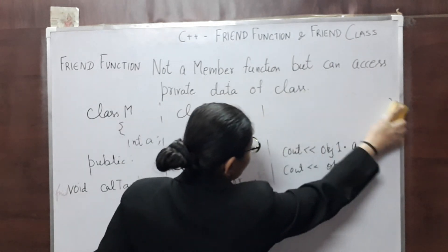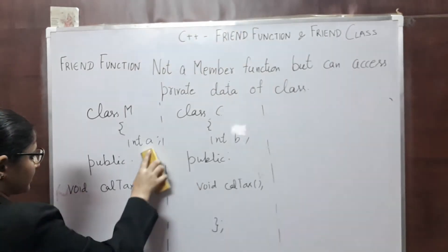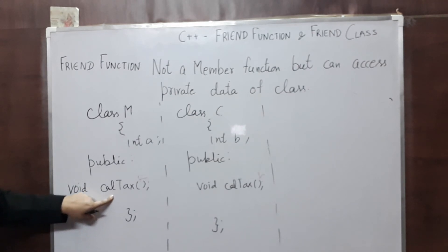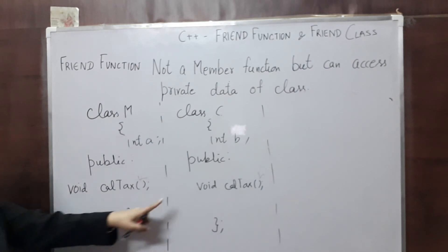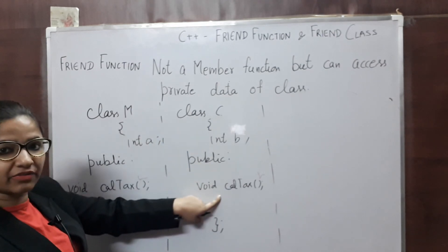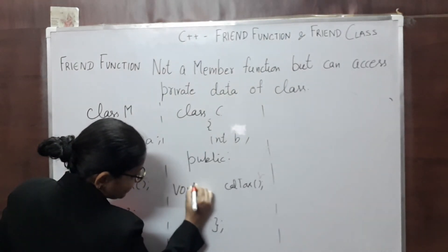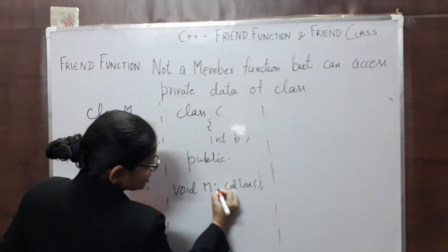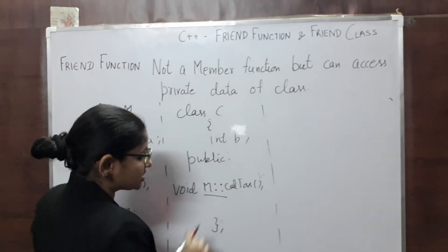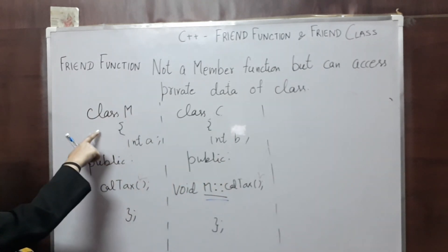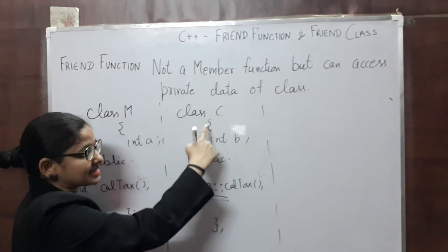Now suppose I have a function cal_tax defined as void cal_tax, and if I say that cal_tax belongs to class M — meaning cal_tax is a member function of class M — then I can also make this cal_tax a friend function of class C. The difference in syntax is that you write the class name and scope resolution operator before cal_tax, making it a member function of class M and a friend function of class C.